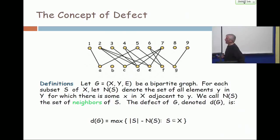I take a bipartite graph with the two sides being X and Y, and for each subset of X, I let N(S), this is called the neighbors of S, be all the elements Y that are adjacent to one or more of the things in X.